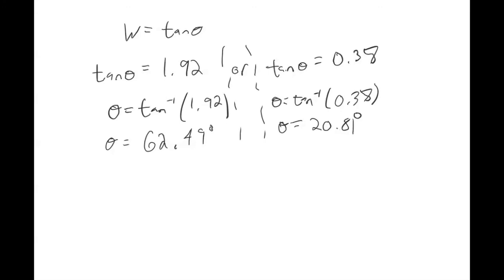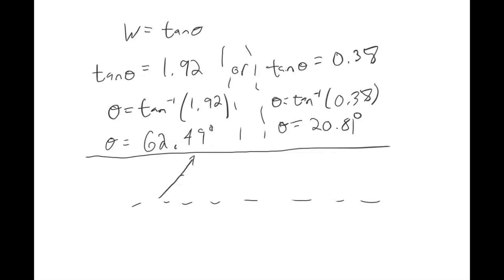We now have two values of W, and since W equals tangent of theta, we have: tangent of theta equals 1.92, or tangent of theta equals 0.37. To find theta, take the inverse tangent of both options. Plugging into your calculator you get two solutions: 62.49 degrees or 20.81 degrees. This tells us we can either launch at an angle of about 62 degrees above the horizontal, or at the shallower angle of about 20.8 degrees.